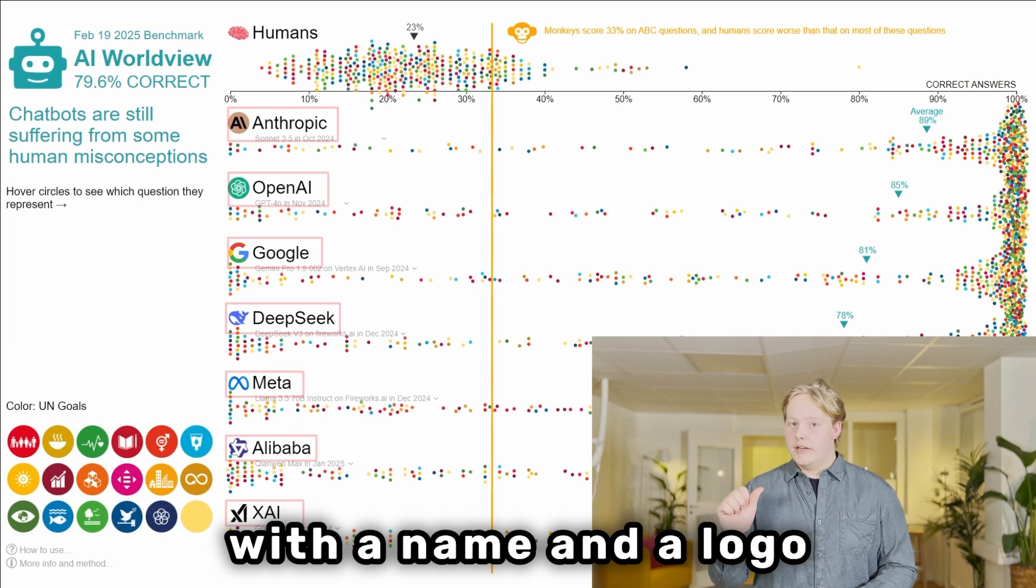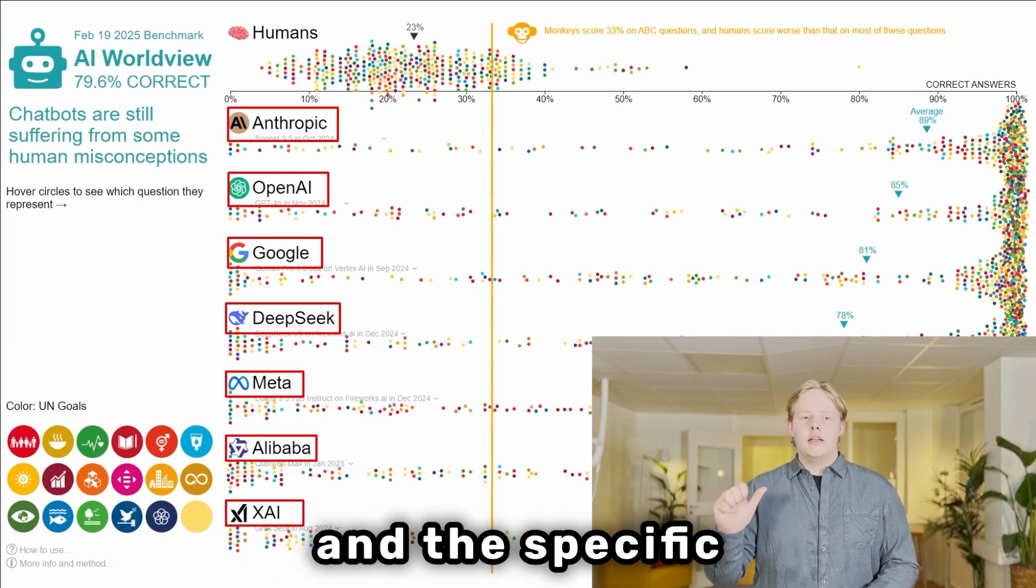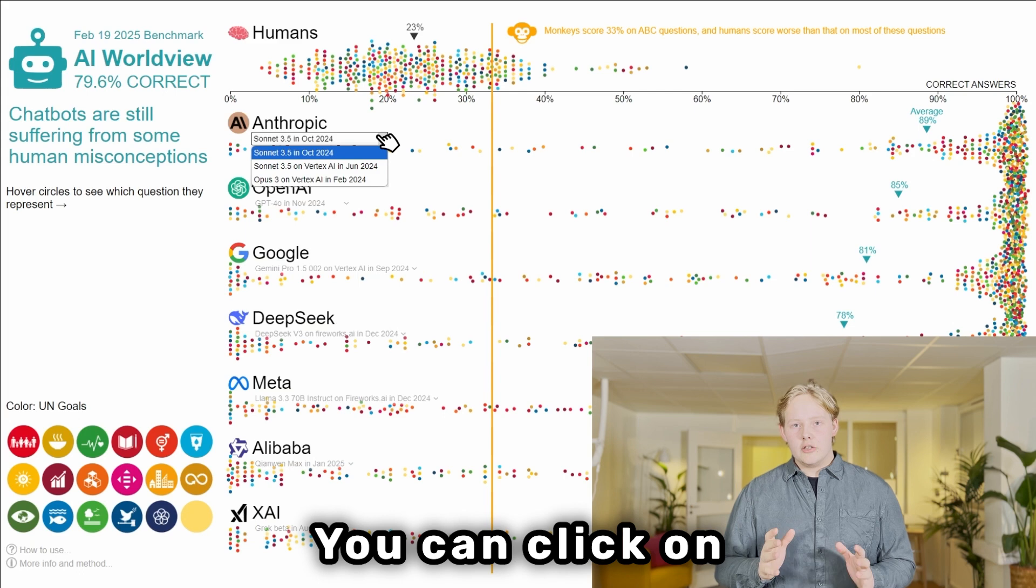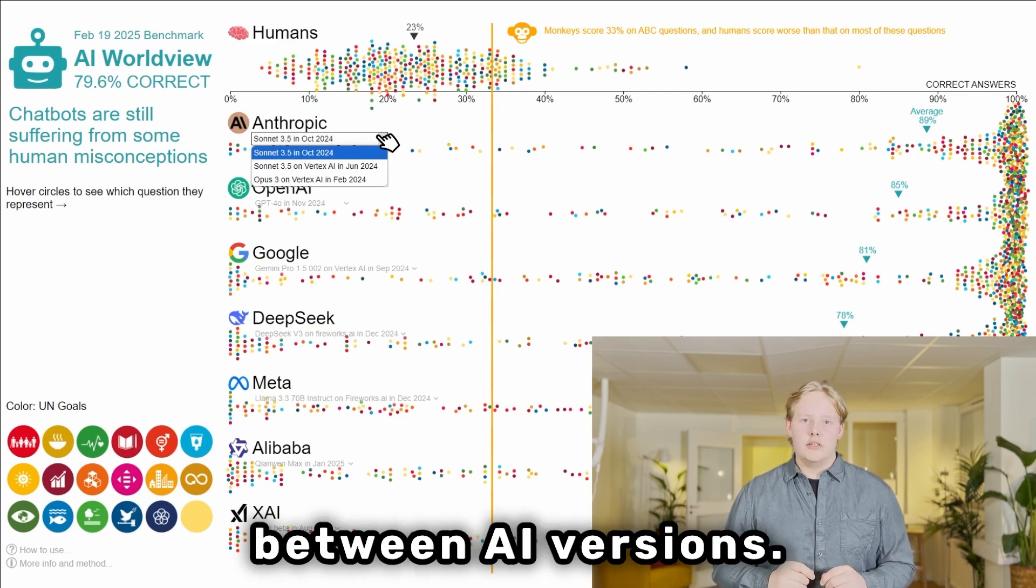Each chatbot is listed with a name and a logo and the specific AI model that was used. You can click on the model name to switch between AI versions.